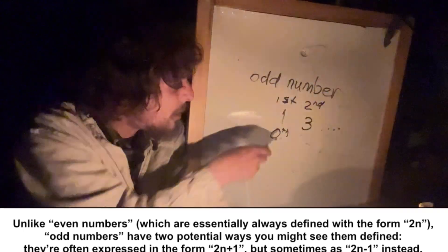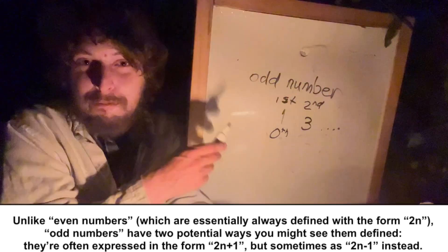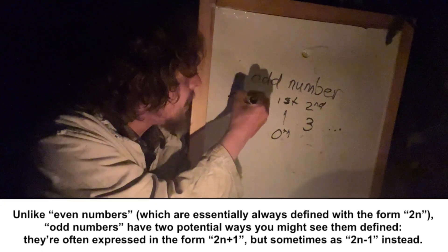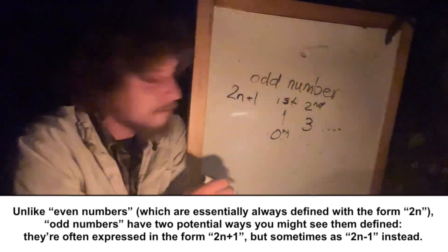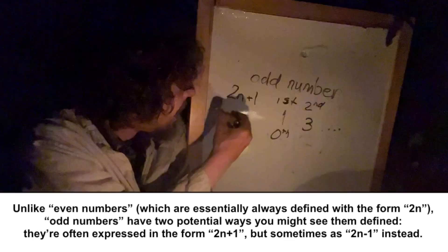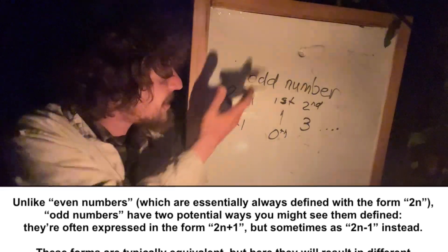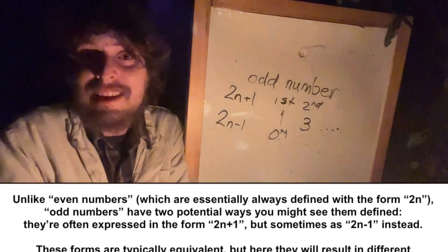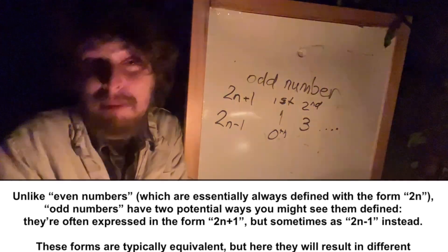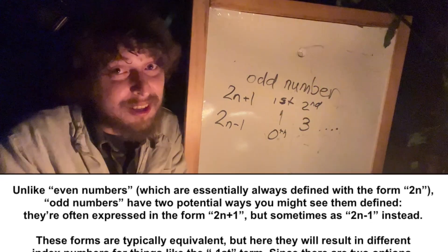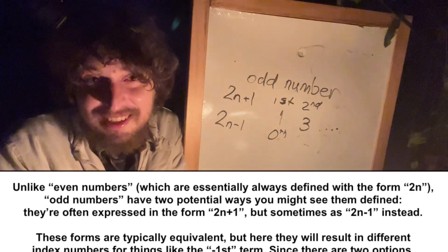Now, these follow different equations. We can define the odd numbers as either 2n plus 1 for some n or as 2n minus 1 for some n. And it's similar to how you could either casually describe them as the numbers that are 1 more than an even number or the numbers that are 1 less than an even number.